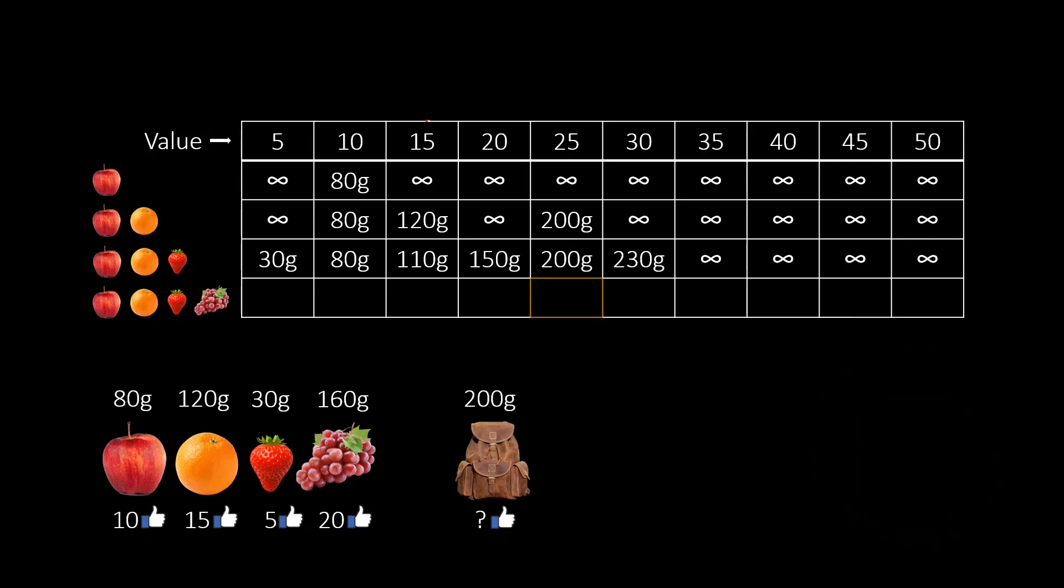From the third row, we already know the best subsets using only the first three fruits. Adding the grapes to the mix, we have two options. Either we include the grapes in the subset, or we do not use them. If we don't use the grapes, we are just looking for the lightest subset using the first three fruits. This result can be found in the table in the cell above. As the second option, we can also use the grapes.